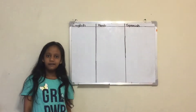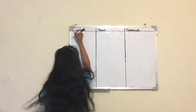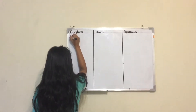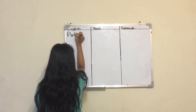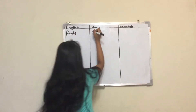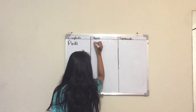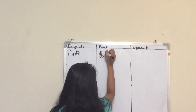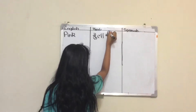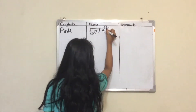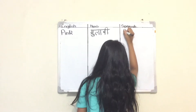So now I'm going to teach you one of my favorite colors: Pink. Spelling of Pink is P, I, N, K. In Hindi, Pink is Gulabi. And in Spanish, Pink is Rosa.